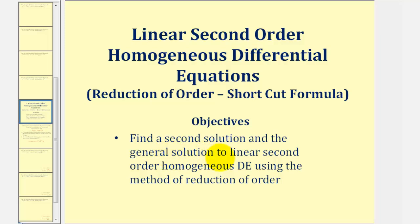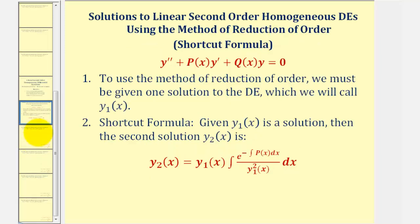Welcome to a lesson on how to find a second solution and the general solution to a linear second order homogeneous differential equation using the shortcut formula for the reduction of order method. In order to apply the shortcut formula, the differential equation must be in standard form, where the coefficient of the y double prime term must be one. We also need to be given one solution to the differential equation, which we will call y sub one of x.